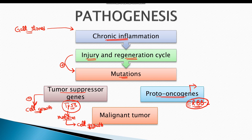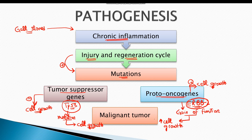Proto-oncogenes are genes that normally promote cell division and growth. In this case, there is a gain-of-function mutation in proto-oncogenes, resulting in excessive cell growth and proliferation. These mutations in tumor suppressor genes as well as proto-oncogenes increase cell proliferation, forming a malignant tumor. Certain infections such as Helicobacter and chronic Salmonella infections are also thought to play an important role.